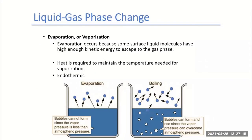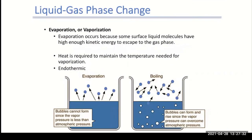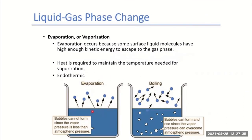Looking at the first phase change between the liquid and gas phase: in the process of going from liquid to gas, we can do evaporation, also called vaporization. This is when we start with our liquid and heat it up enough, adding enough heat to maintain the pressure needed for vaporization. We have to add enough energy into the system to break the intermolecular forces holding the molecules together. Once we break those intermolecular forces, the molecules can escape the liquid phase and go into the gas phase.